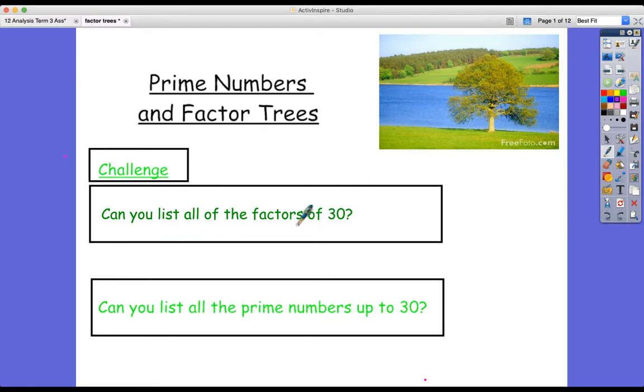Can you list all the factors of 30? Remember that the first factor of any number is always one, and they naturally pair up. So what do we times one by to get 30? It's 30. Now 30 is an even number, so the next factor along is two. What do we times that by? 15. Three is the next factor, and what do we times three by? It's 10. And the next one, well four isn't a factor, so the next times table that 30 goes into is five. What do we times five by? It's six. So we've actually got eight factors of 30.